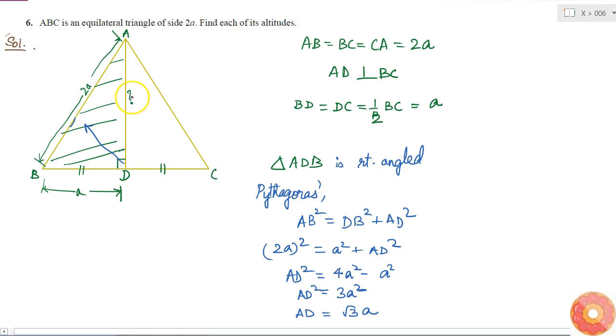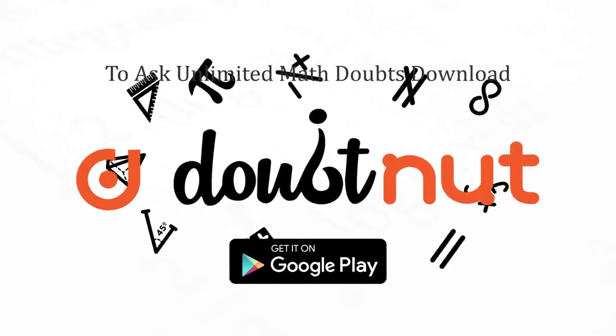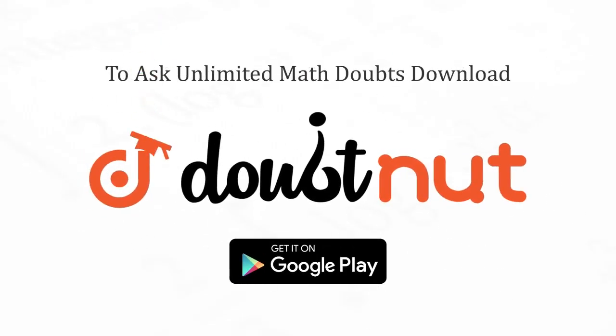Now I know that in an equilateral triangle, it is totally symmetric. All the three sides are equal and all the three altitudes are also equal. So all the three altitudes have the length root 3A.